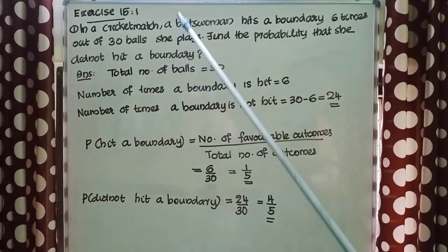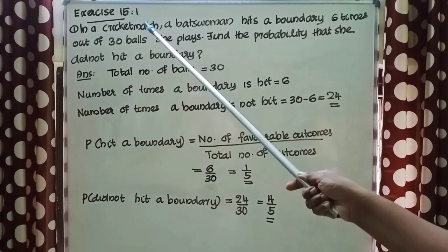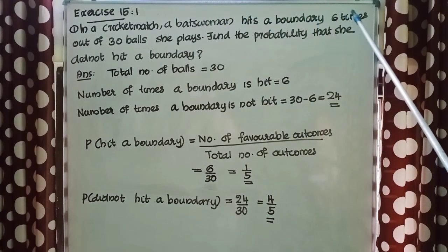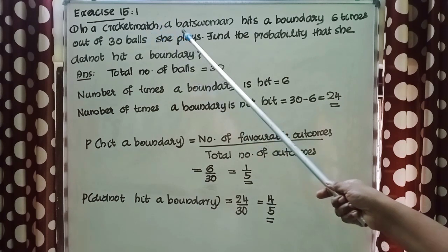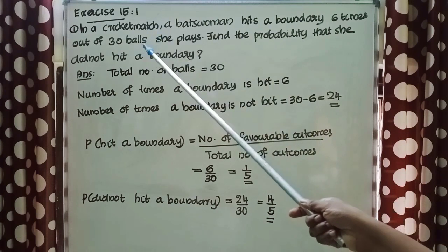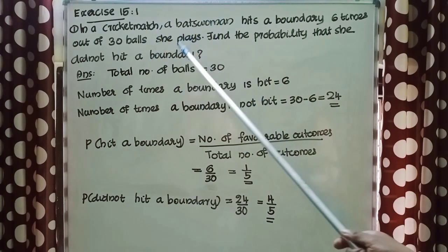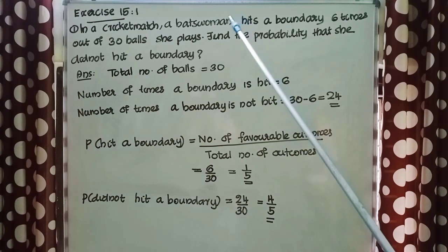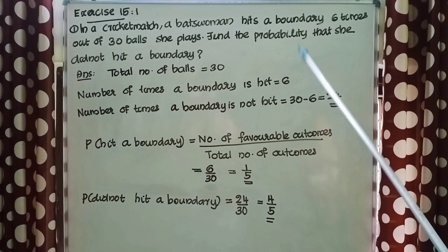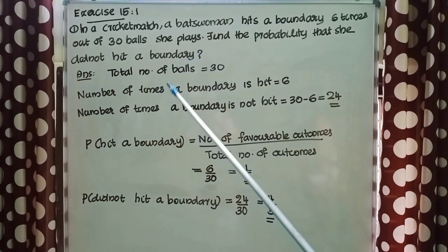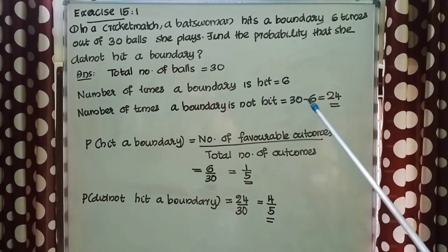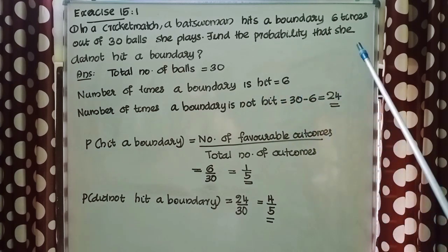Let us discuss some problems. First question: in a cricket match a batswoman hits a boundary 6 times out of 30 balls she plays. Find the probability that she did not hit a boundary. Here total number of balls = 30, number of times a boundary is hit = 6, so number of times a boundary is not hit = 30 − 6 = 24.